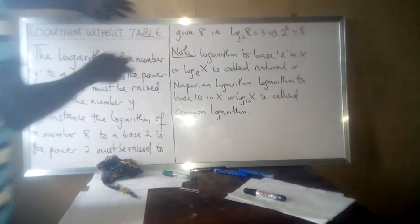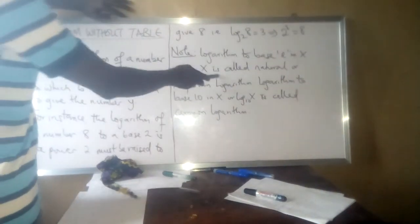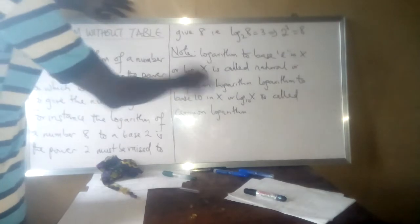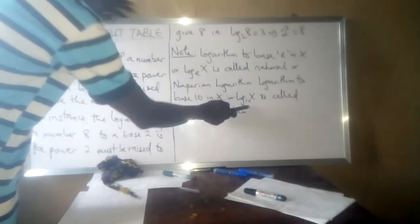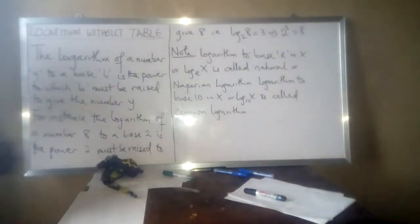Logarithm to base e (ln x or log x base e) is called natural or napereon logarithm. Logarithm to base 10 (ln x or log x base 10) is called common logarithm.